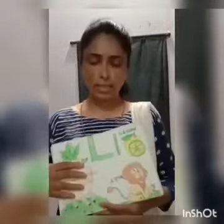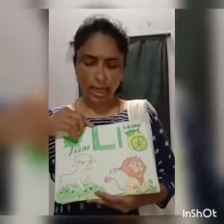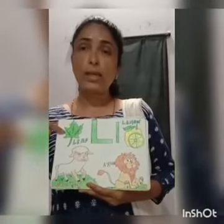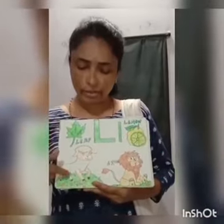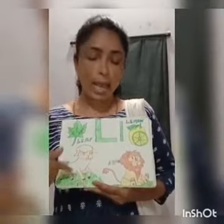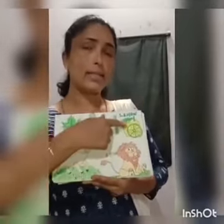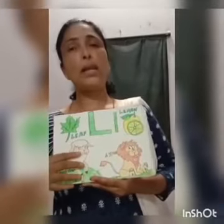After K, we have capital L. This is capital L — leaf, lamp, lion and lemon. Children, we have completed A to L.